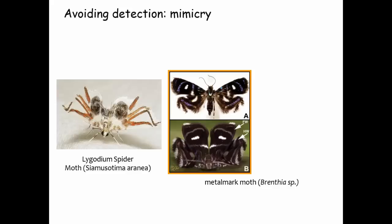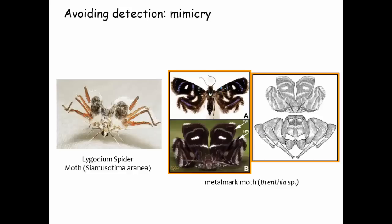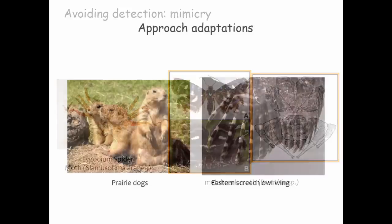Many species mimic other species, and we're discovering new examples all the time. There's the recently named Ligodium spider moth, which looks somewhat like a spider, especially against a white background. There is also a moth in the middle that looks like a displaying spider. Look up the videos under Metal Mark Moth and Spider — you'll see that spiders actually think these moths are displaying aggressive spiders. That's a pretty good defense if you're a moth.